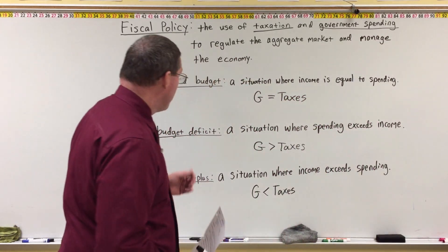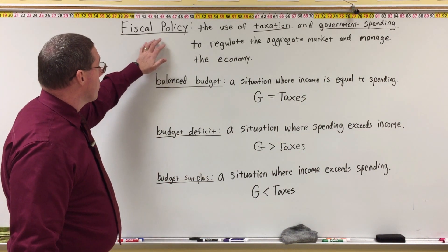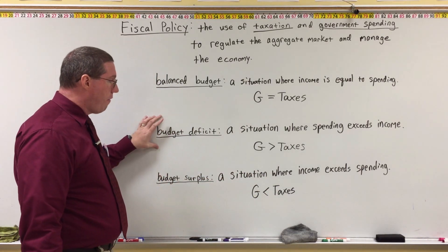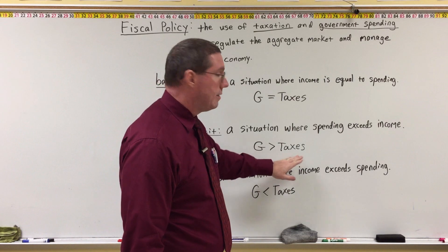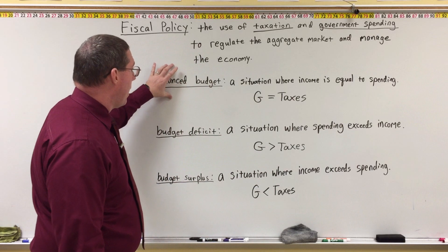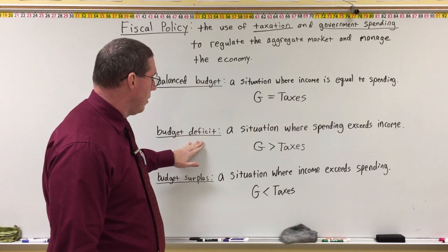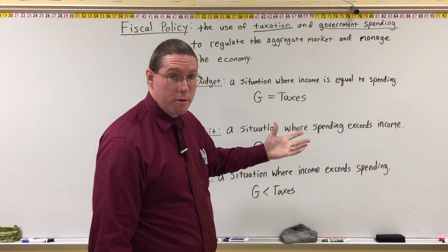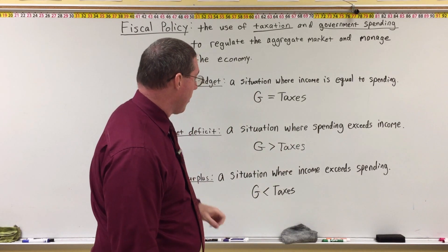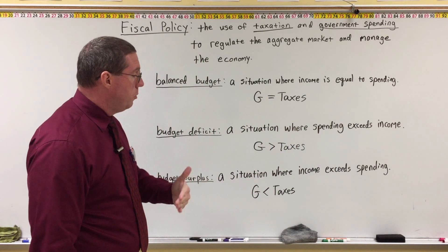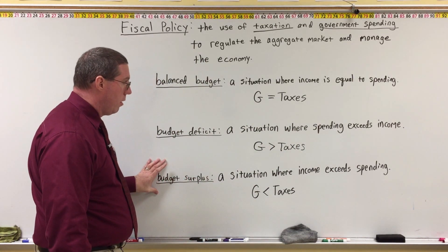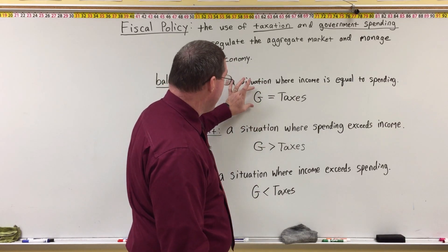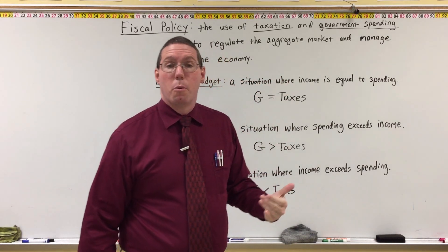Congress, through fiscal policy, can manage the economy by choosing to run a budget deficit — either by increasing government spending or by decreasing taxes, or both — which makes spending greater than taxes. Or, they may choose to run a budget surplus by either decreasing government spending or increasing taxes, making taxes greater than spending. That's what we're going to look at next.